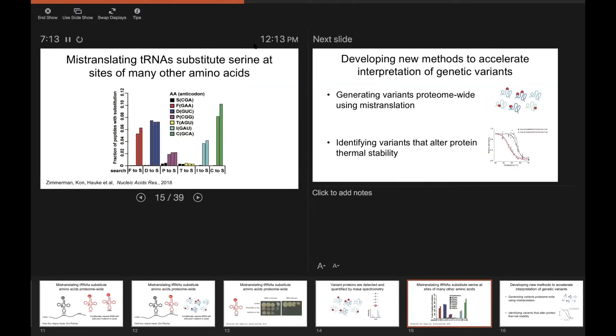We did this on protein from yeast expressing serine tRNAs with anticodons that would direct serine at sites of many different amino acids, and six of them are shown here. And for all but five of the six, in this example at least,